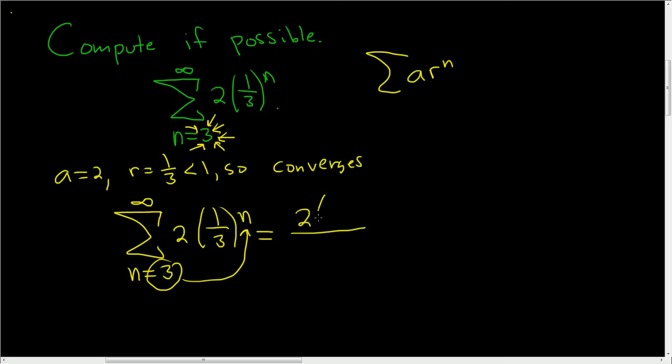So it's 2 times 1/3 cubed, and on the bottom it's just 1 minus r, so 1 minus 1/3. Again, you just take this number and put it there. Always works as long as it converges.